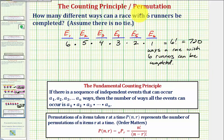The second way to solve this problem is to use a permutation. When using a permutation, order matters. When considering how six runners can finish a race, the order certainly matters. Since we have six runners and they will all finish, the number of ways they can finish would be six permute six.